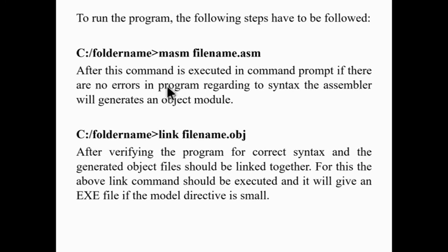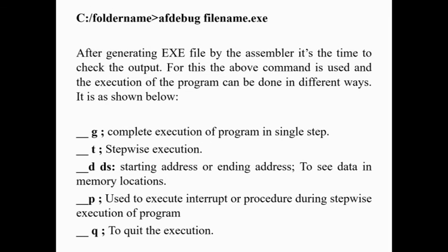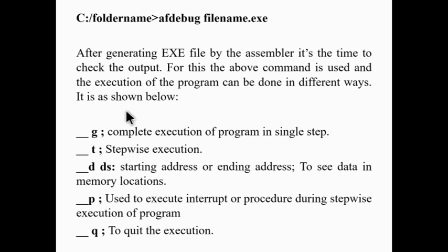After the masm [filename].asm command is executed in the command prompt, if there are no syntax errors, the assembler will generate an object module. After generating the .exe file by the assembler, it is time to check the output. The above command is used and execution of the program can be done in different ways.